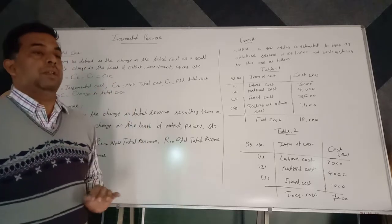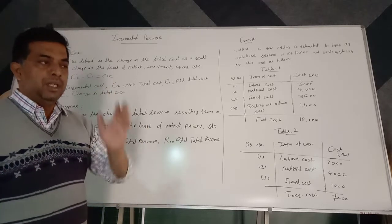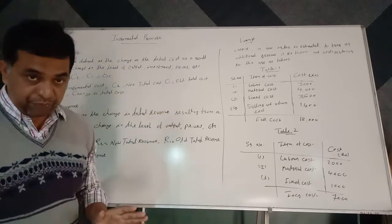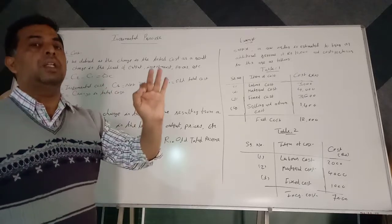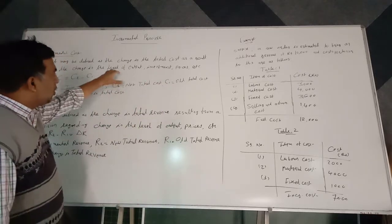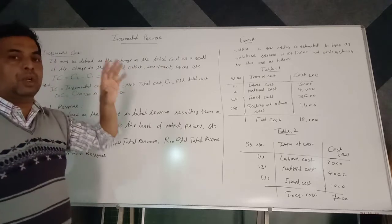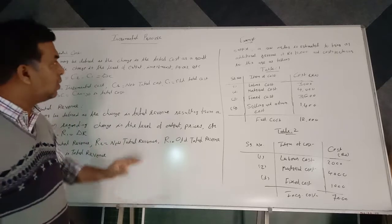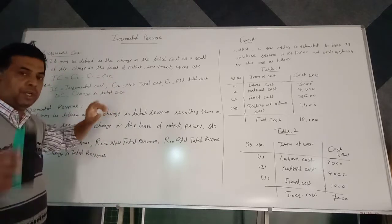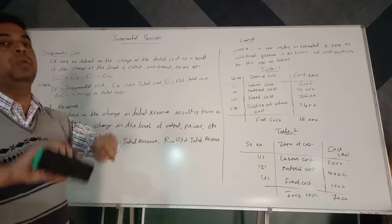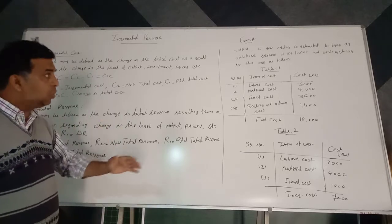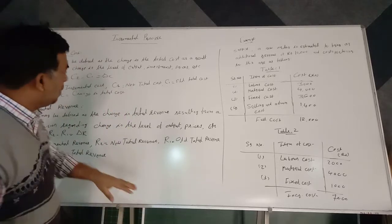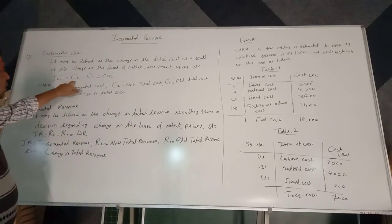Incremental cost is similar to marginal cost, but marginal cost has a limited meaning — it refers to the change in total cost due to production of just one additional unit. Here, the concept is broader and more relevant in the decision-making process because it indicates the difference between the old cost and the new cost due to any decision regarding price, investment, etc.